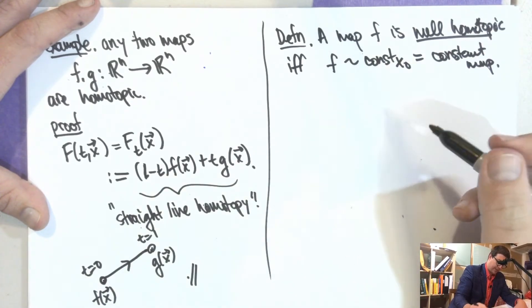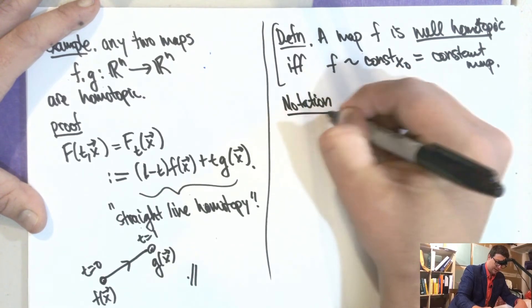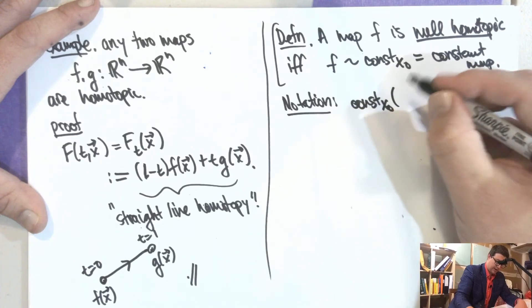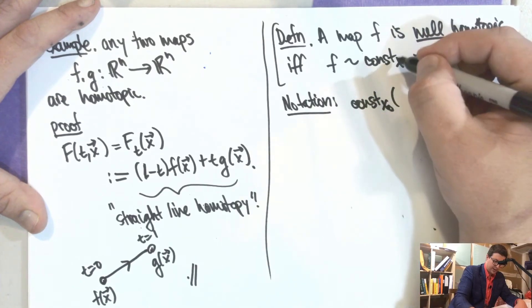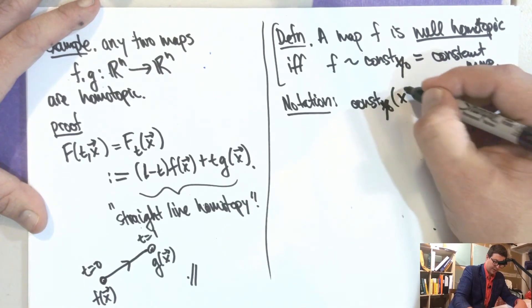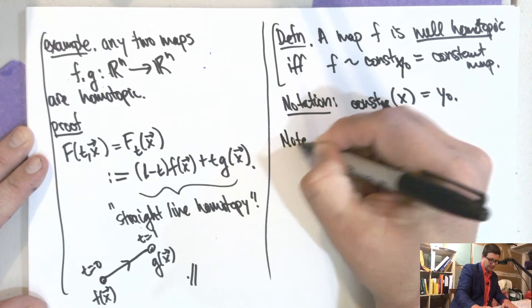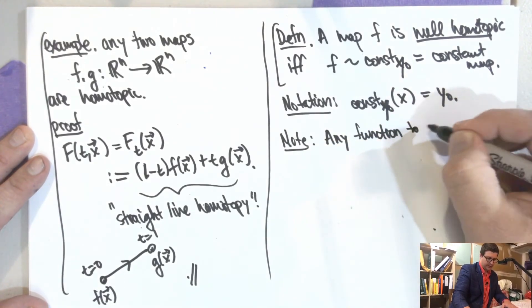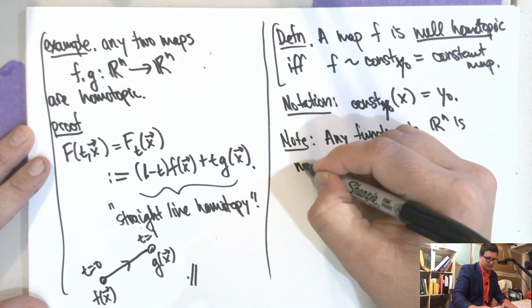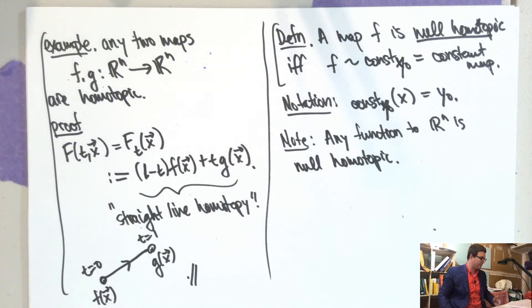The notation here is that this thing, let's do Y naught because it's supposed to be in the target. This thing here, if I plug in any X, this is just Y naught. So it just returns the constant value. And then a consequence of this thing is that any function to RN to RN is null homotopic. Because the function is one of those and they're all equivalent anyway.